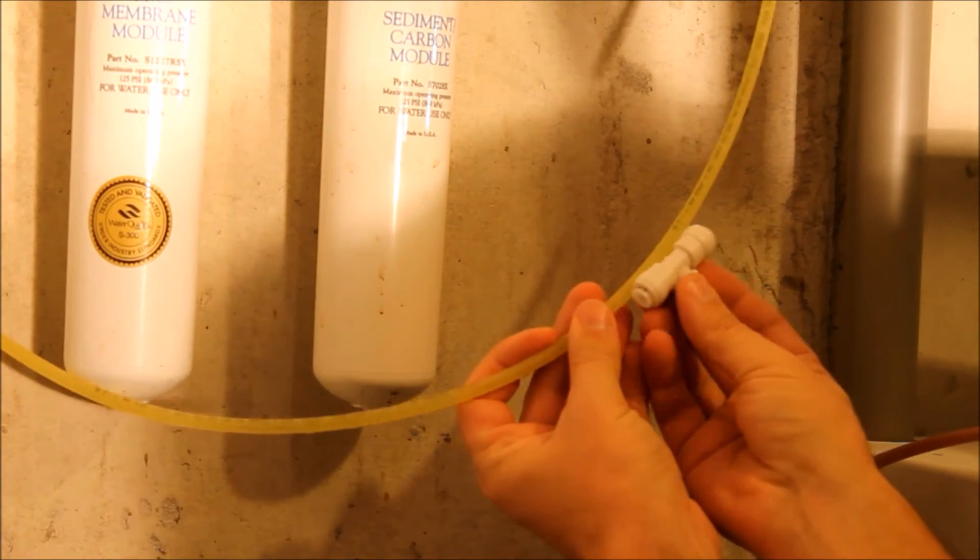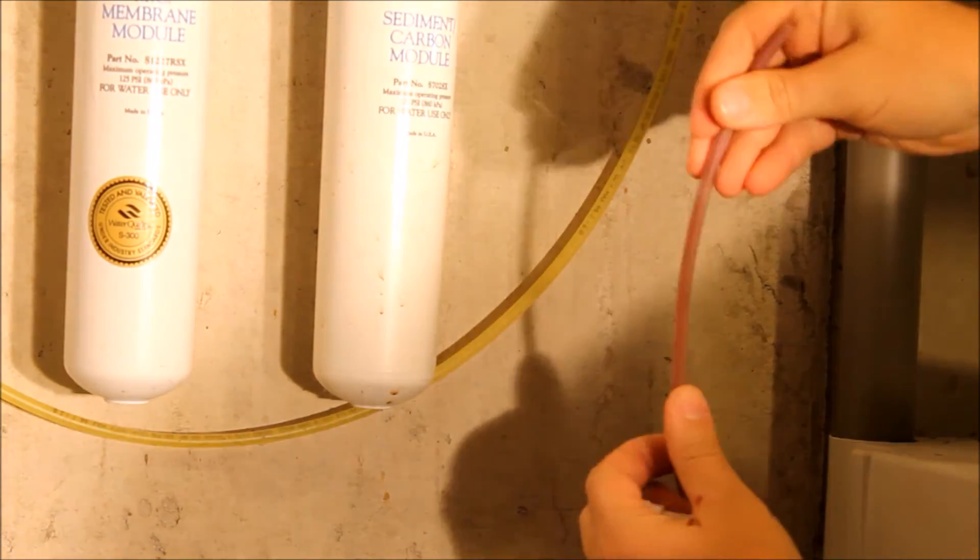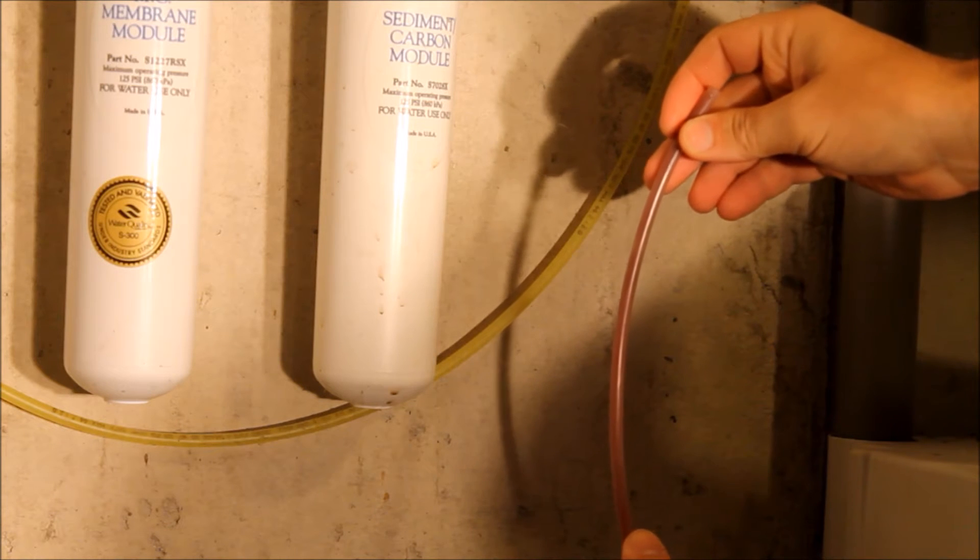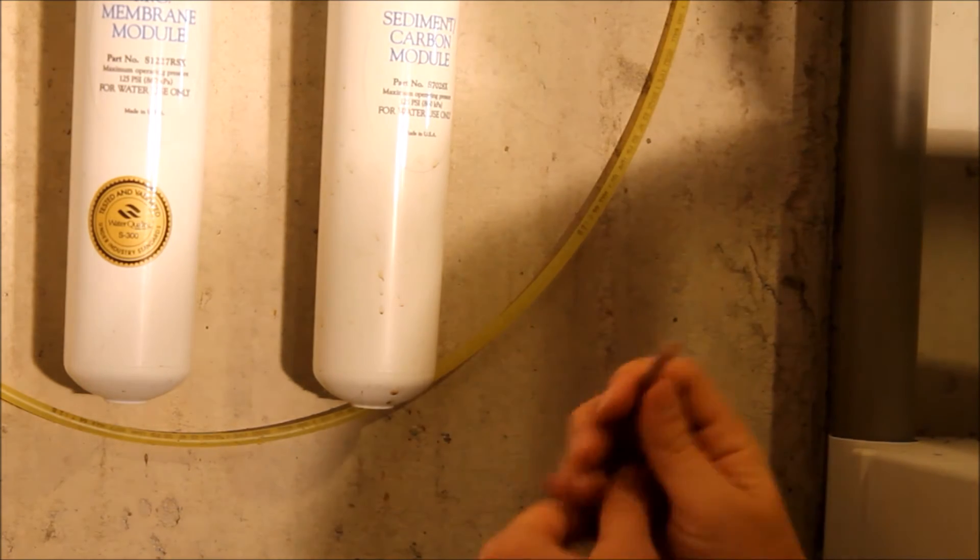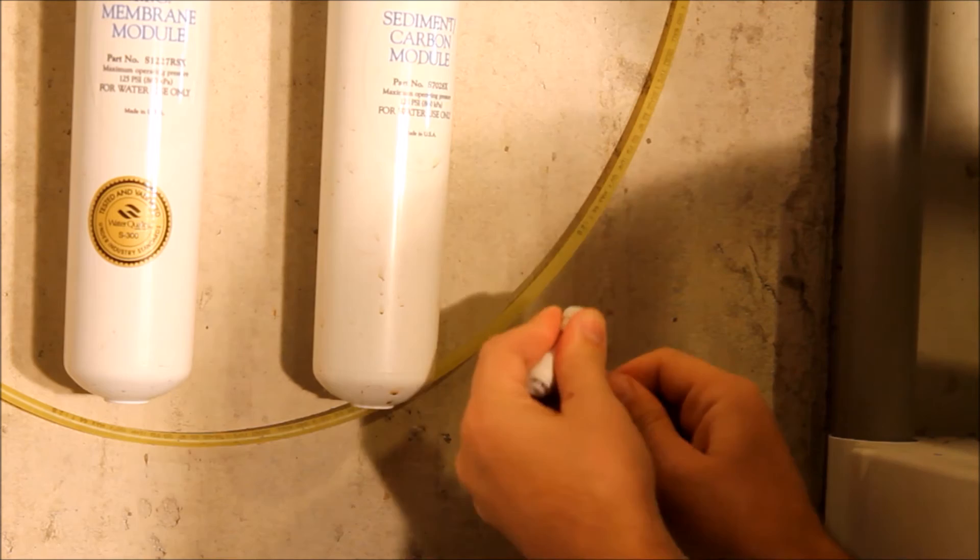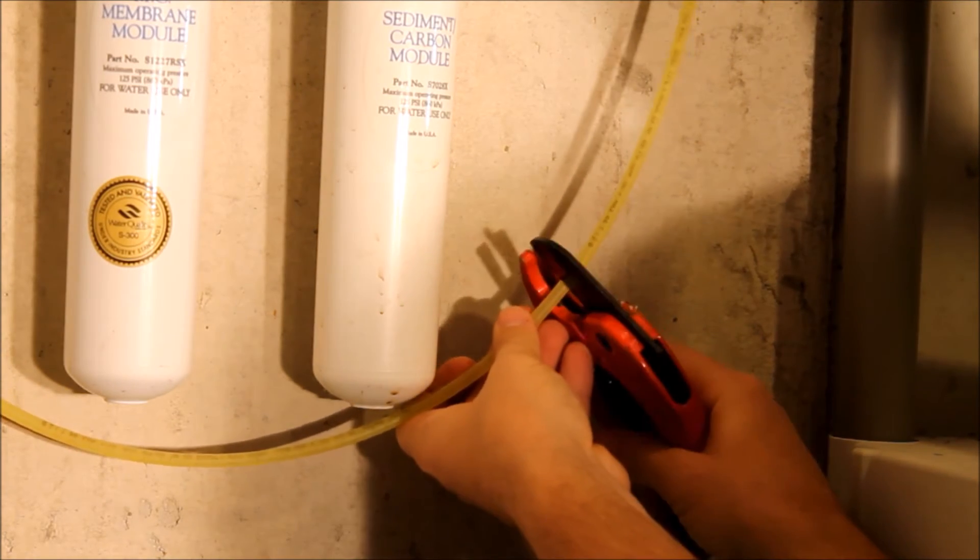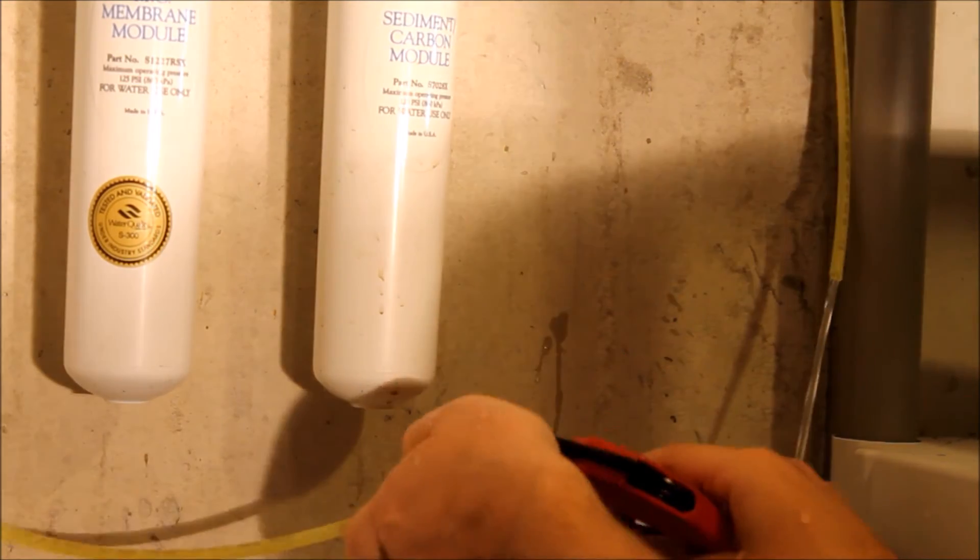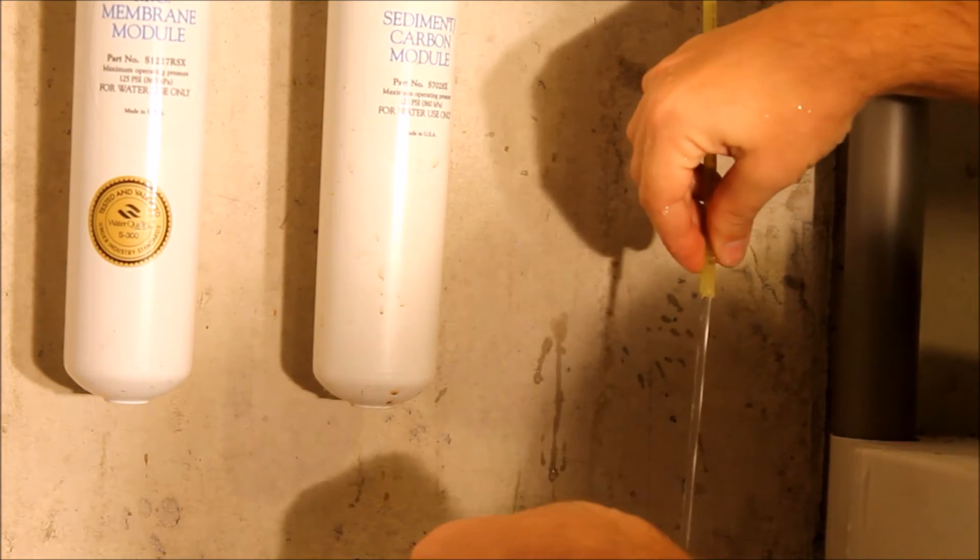Hopefully if all goes well we'll be able to hook this right up. You can see this hose used to be clear, this quarter inch plastic line here. Our hard water has so much iron in it and other minerals it just turned it orange or red. Let's see how well these quick connects work. I've never used these, I usually use the brass fittings.